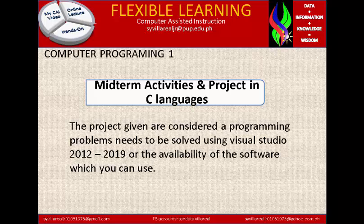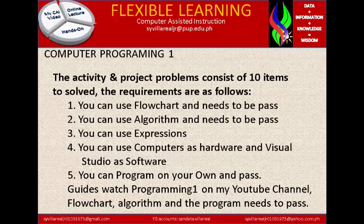The project activities involve programming problems to be solved using Visual Studio 2012 to 2019, or any available version of the software. The activity and project problems consist of 10 items to solve. Requirement number 1: you need to create a flowchart for each item — that is 10 flowcharts in total — and it needs to be passed.